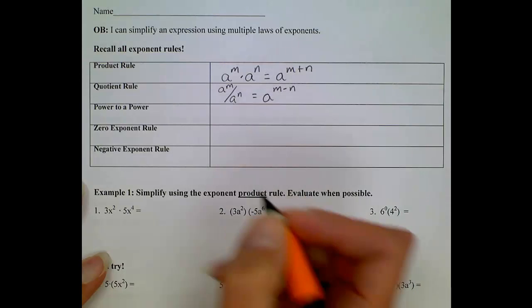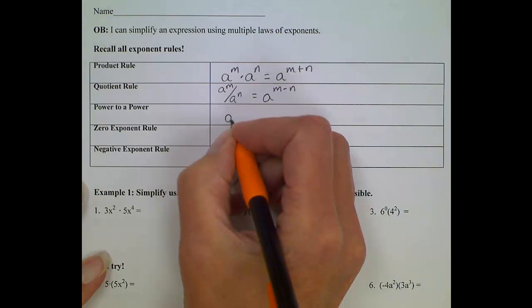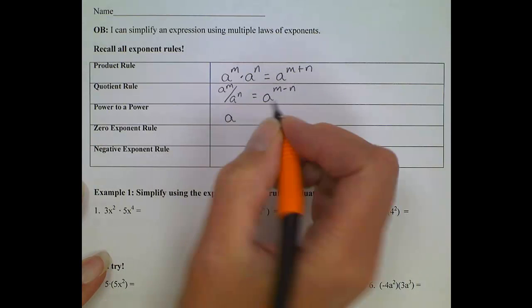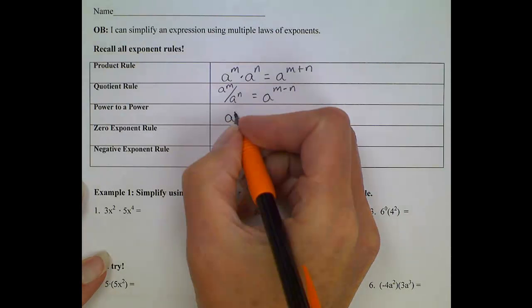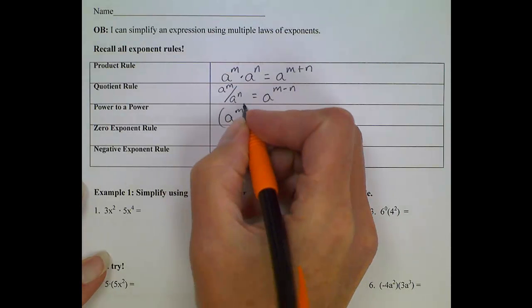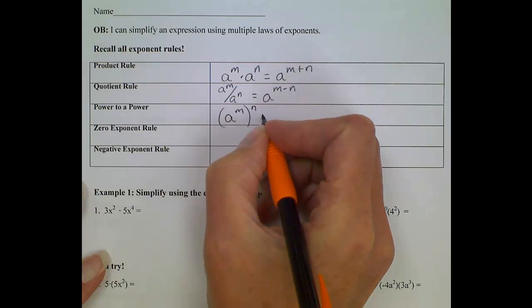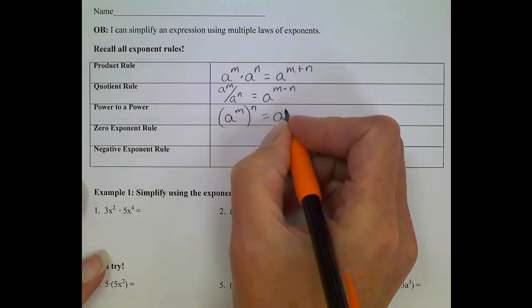If we have a power to a power, for example, if we have a raised to the m power, raised to the n power, we multiply those two exponents together.